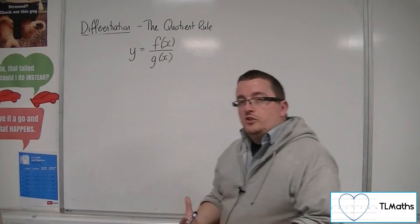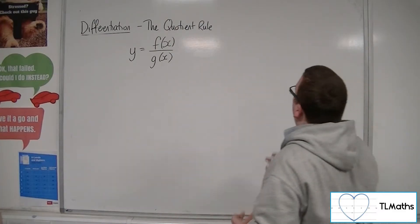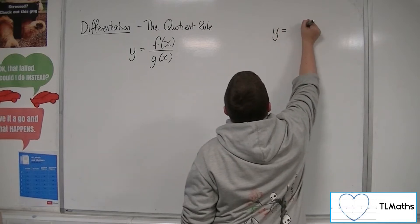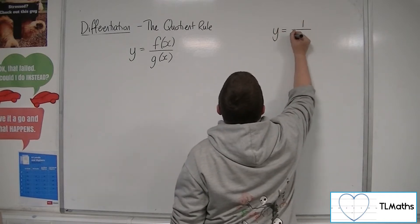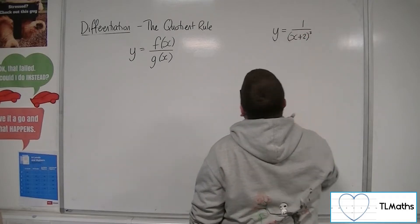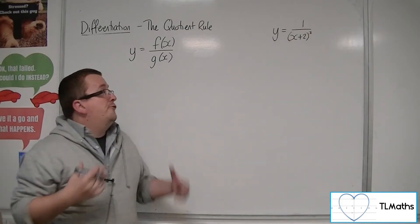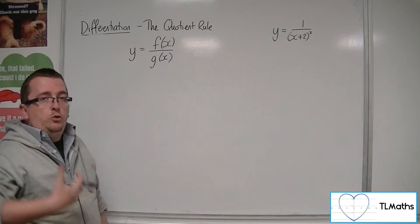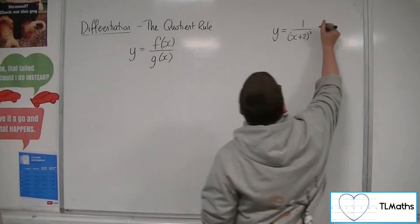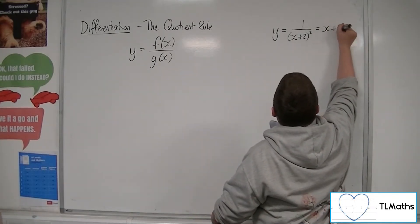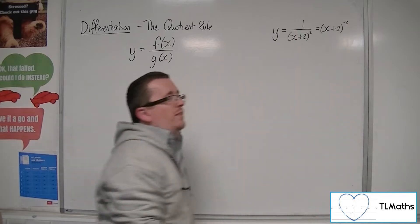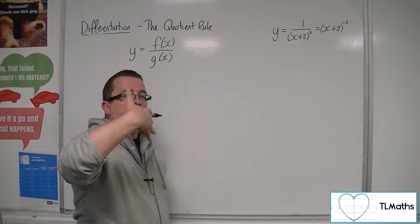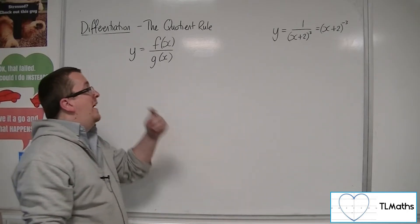For types of functions where we'd use the quotient rule, you could use it on something like y equals 1 over (x+2) cubed if you wanted. That's a fraction, but you could also write that as (x+2) to the minus 3, and that would actually be easier to complete using the chain rule to differentiate it that way.